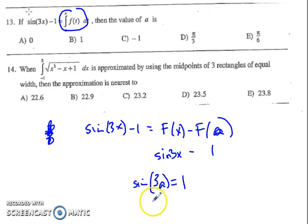So sine is equal to 1 where the angle is equal to π over 2, so a must be π over 6.